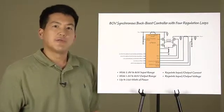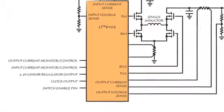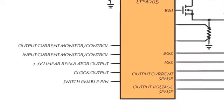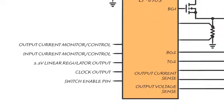The LT8705 also includes an integrated 3.3-volt linear regulator. This can be used to power external loads, and the linear regulator can provide up to 12 milliamps of output current.